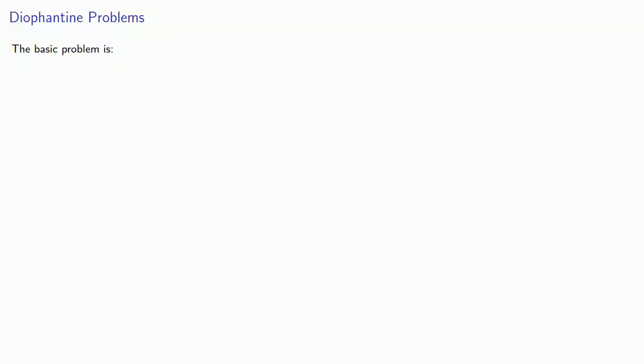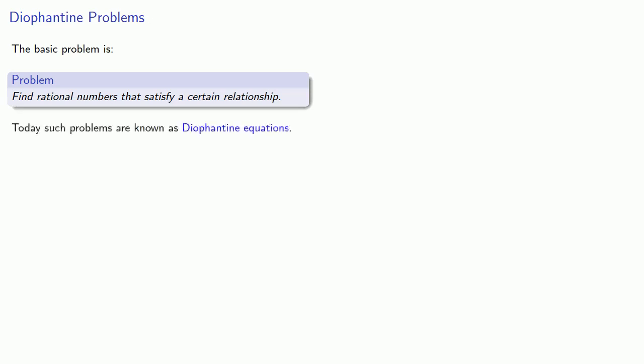While Diophantus invented a form of notation, it was primarily for bookkeeping purposes so that he could solve extraordinary problems. The basic problem solved by Diophantus is to find rational numbers that satisfy a certain relationship. Today such problems are known as Diophantine equations.